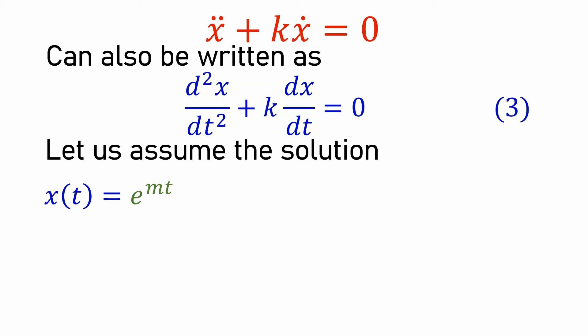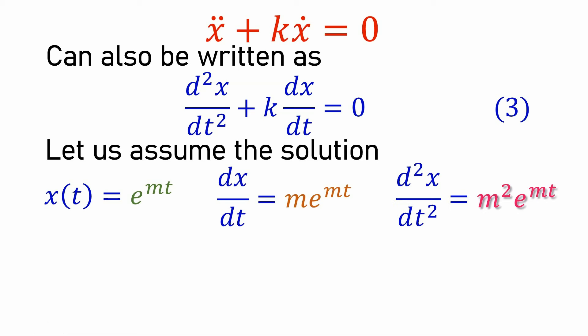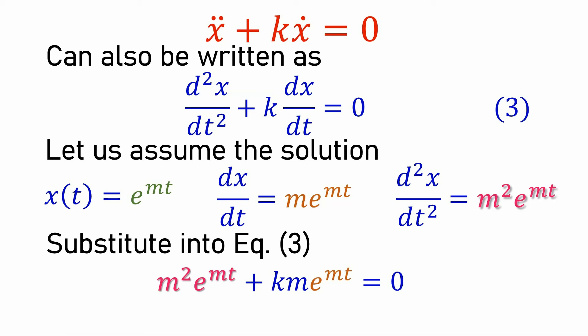So let's differentiate x(t). The first derivative gives us m·e^(mt), and differentiating a second time gives us m²·e^(mt). After this, we can substitute all of them into equation 3.